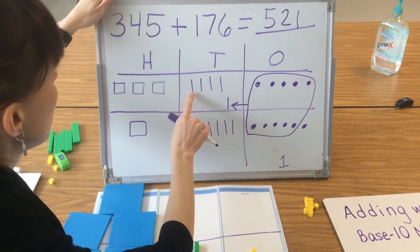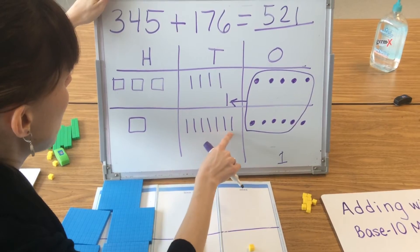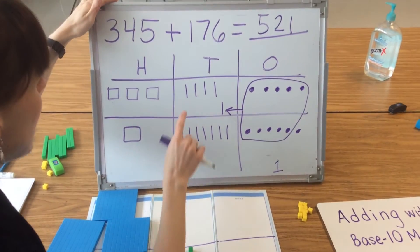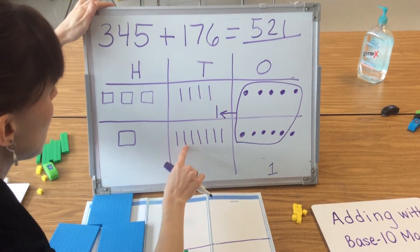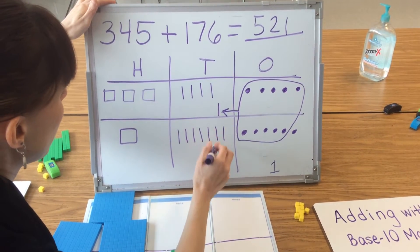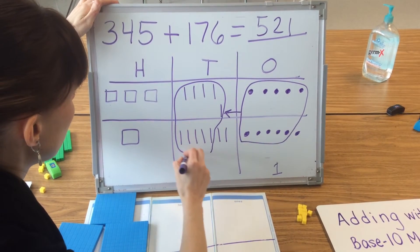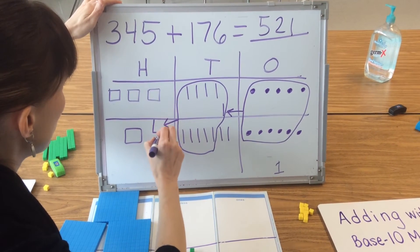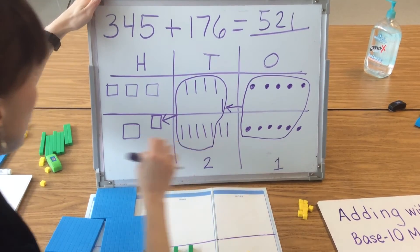I count my tens: 1, 2, 3, 4, 5, 6, 7, 8, 9, 10, 11, 12. I have to compose a 100, so I have to circle 10 tens: 1, 2, 3, 4, 5, 6, 7, 8, 9, 10. I circle these 10 tens, draw my arrow into the hundreds place and make a new 100 there. I still have two tens in the tens place.